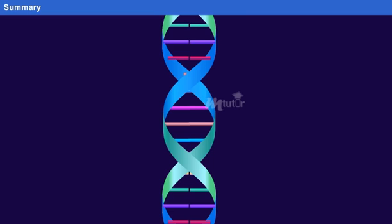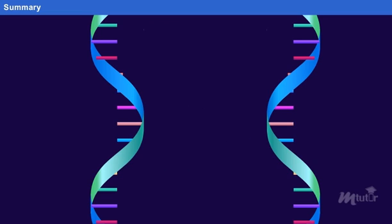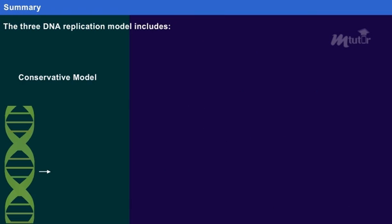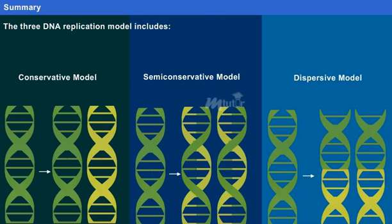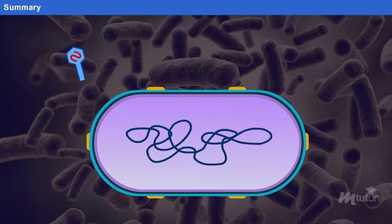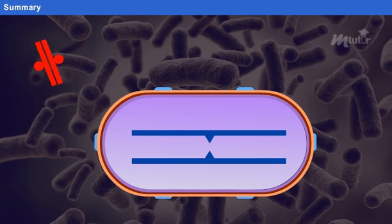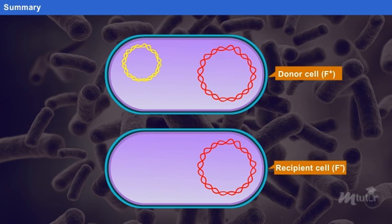Summary. DNA replication is a vital and complex process occurring in all life forms. The three DNA replication models include the conservative model, the semi-conservative model and the dispersive model. Transduction is the process by which DNA from a bacterium is transferred to another by a bacteriophage. DNA transformation implicates the movement of naked DNA into a recipient bacterium. Bacterial conjugation is the transfer of genetic material between the bacterial cells by a tube called pilus.